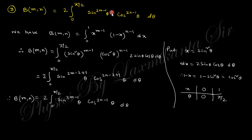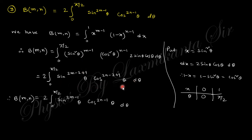The next property: Beta(m, n) = 2 times the integral from 0 to π/2 of sin^(2m-1)(θ) cos^(2n-1)(θ) dθ. From the definition, substitute x = sin²θ, so dx = 2 sinθ cosθ dθ and (1-x) = cos²θ. Changing limits: when x=0, θ=0; when x=1, θ=π/2. After rearranging, this trigonometric property is obtained. These properties help solve various integrals, particularly in kinetic theory of gases and statistical mechanics.